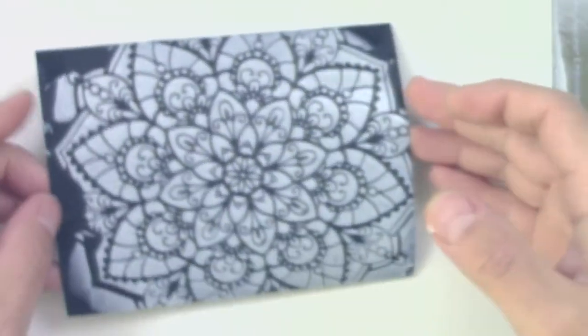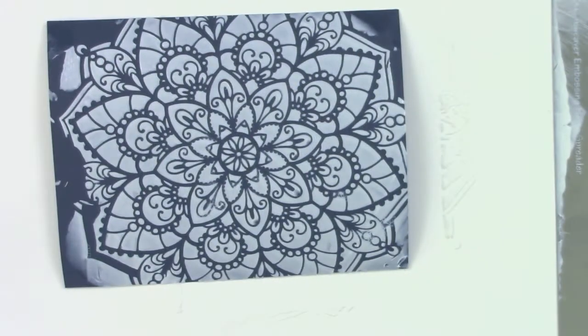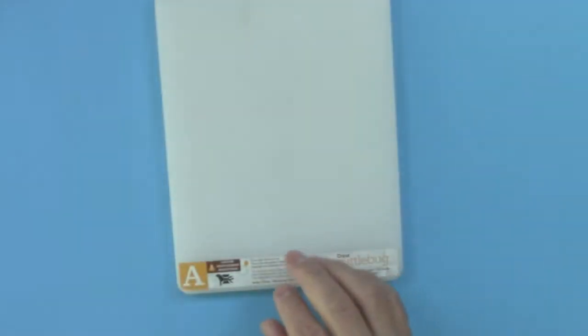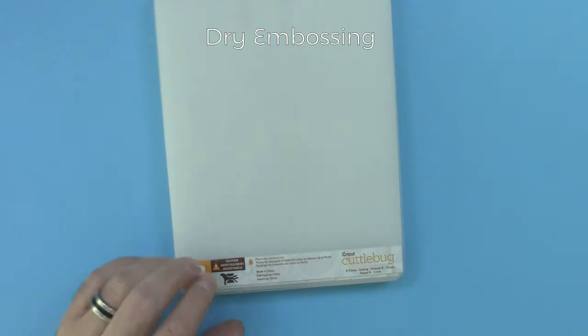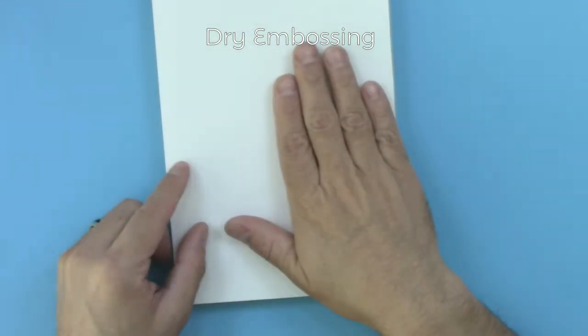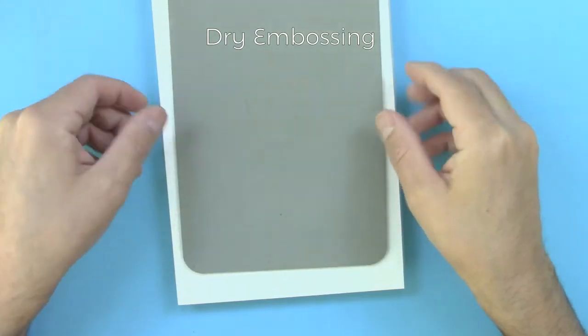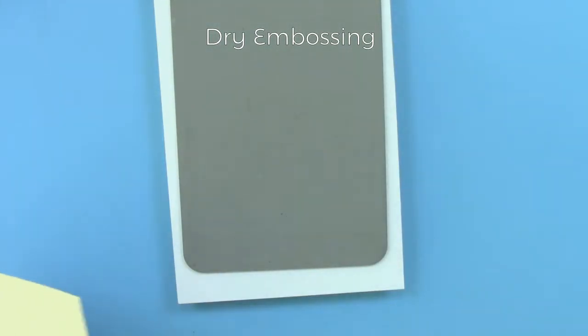The final technique I'll show you is dry embossing using a die cutting machine. Here is the combination, the sandwich I used for this technique: an A and B plate, a piece of card stock and an embossing mat.